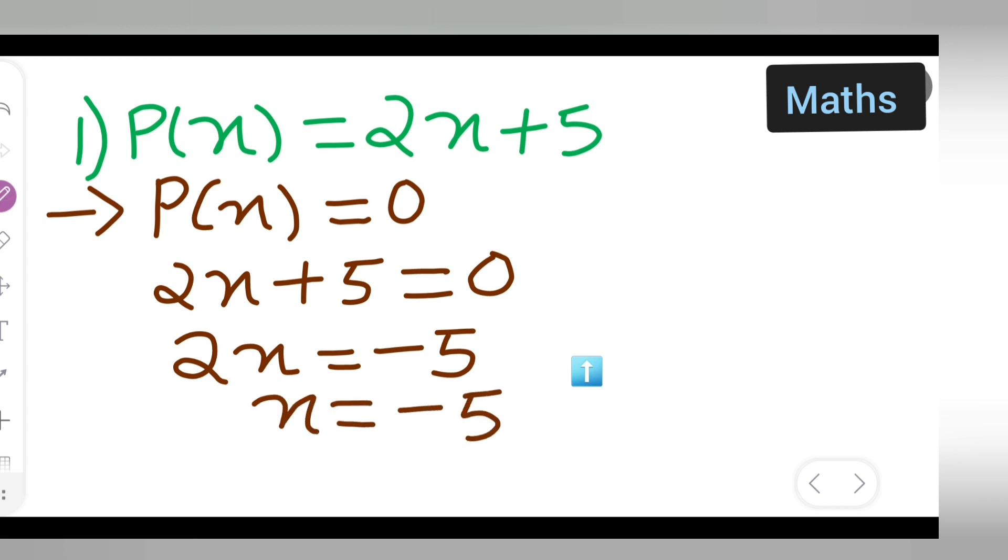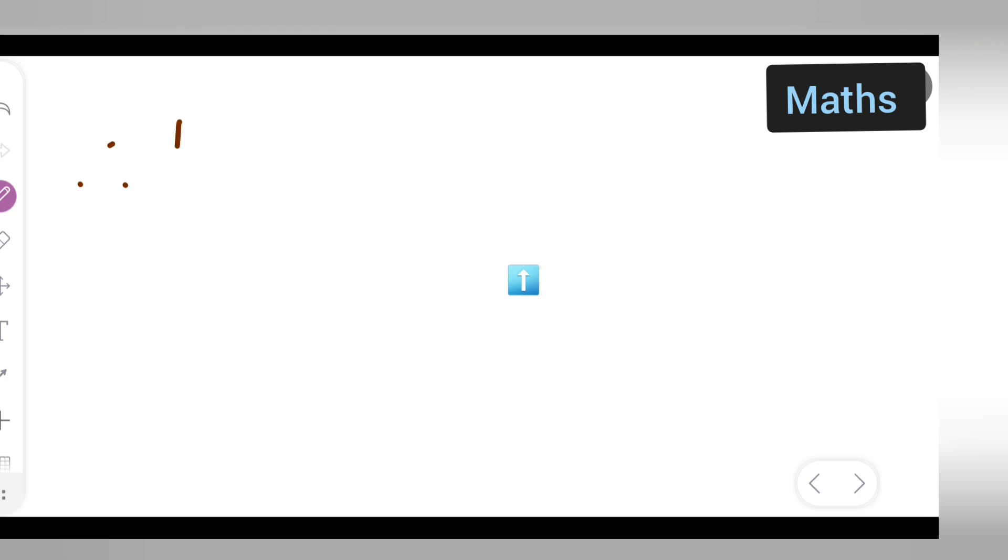This 2 will go down. So the value of x is equal to minus 5 by 2. Therefore, write down that the zero of the polynomial, the zero of P(x), is equal to minus 5 upon 2.